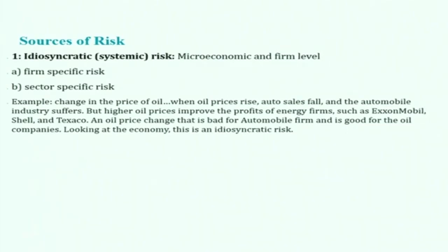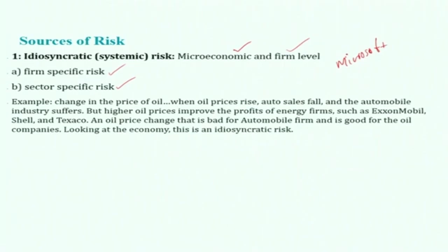There are mainly two sources of risk: one is called idiosyncratic risk and the other is systematic risk. Idiosyncratic risk is mostly a microeconomic and firm-level risk. This can be further classified into firm-specific risk and sector-specific risk. Firm-specific risk relates to a particular firm — take Microsoft, for example — its own managerial, technical problems, raw material issues, or labor market issues specific to that firm.